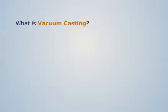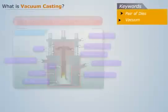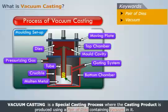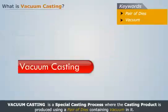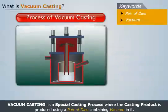Vacuum casting is a special casting process where the casting product is produced using a pair of dies containing vacuum in it. Let's understand this process with the help of an example.